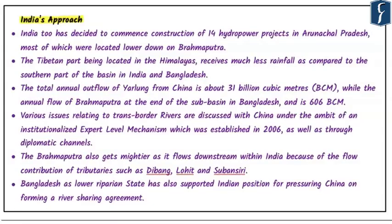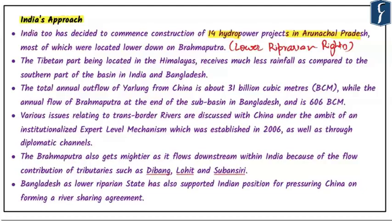India has decided to commence construction of 14 hydropower projects in Arunachal Pradesh. These projects will be located lower down on the Brahmaputra and may be viewed as India's effort to establish its lower riparian rights to counter China's first-use priority rights. However, some projects like the Lower Subansiri Hydroelectric Power Project are stuck in red tape. We need to develop a credible policy and implement it within the established framework to get maximum benefit.